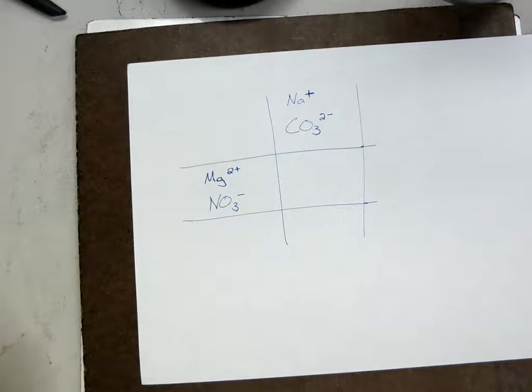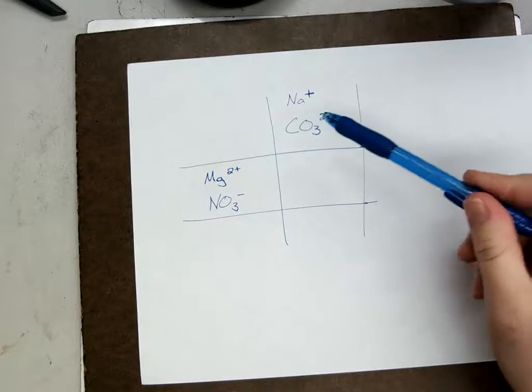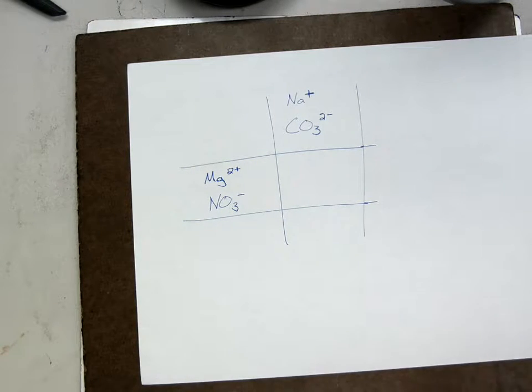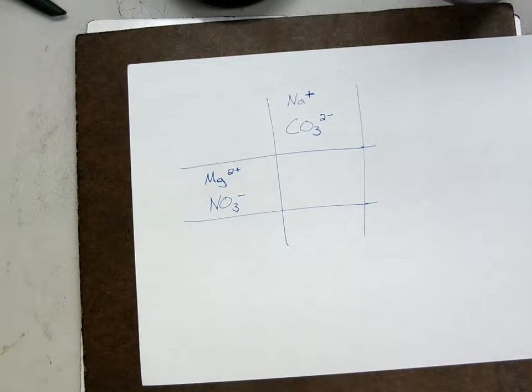Okay, this is going to walk you through how to finish up the double replacement and precipitates lab, the calculations. This is going to be an example. This is not really the data that you took, so you're going to use this as a map. Imagine that you did this combination. Imagine this was a little corner of your data table.